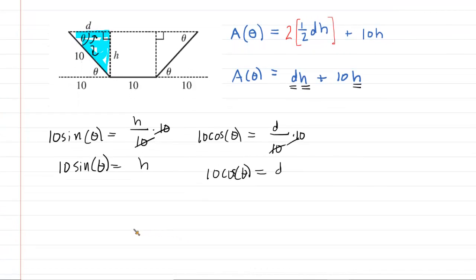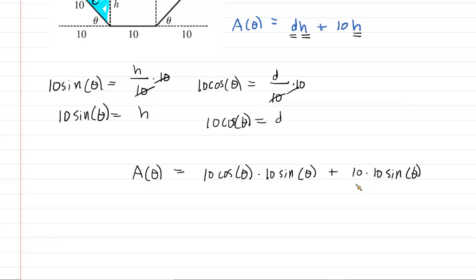Let's make some substitutions. Area as a function of theta equals d, which is 10 cos(θ), times h, which is 10 sin(θ), and then add that to 10 times h, which is 10 sin(θ). We'll simplify this - 10 times 10 is 100, and another 10 times 10 is 100. So we have A(θ) = 100 cos(θ) sin(θ) + 100 sin(θ). This is much better because now we have area as a function of our variable theta.